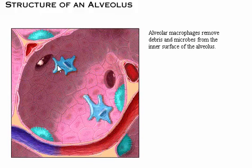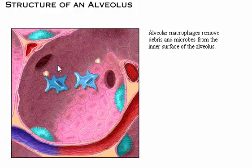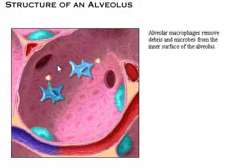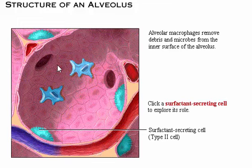The alveolar macrophages, or dust cells, creep along the inner surface of the alveoli, removing debris and microbes. The alveolus also contains scattered surfactant-secreting, or type 2, cells.